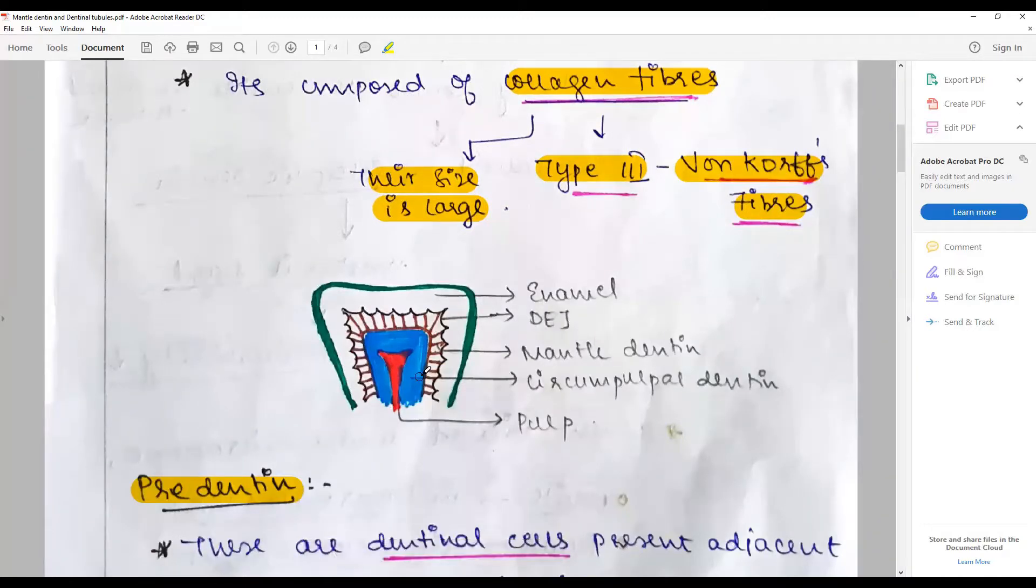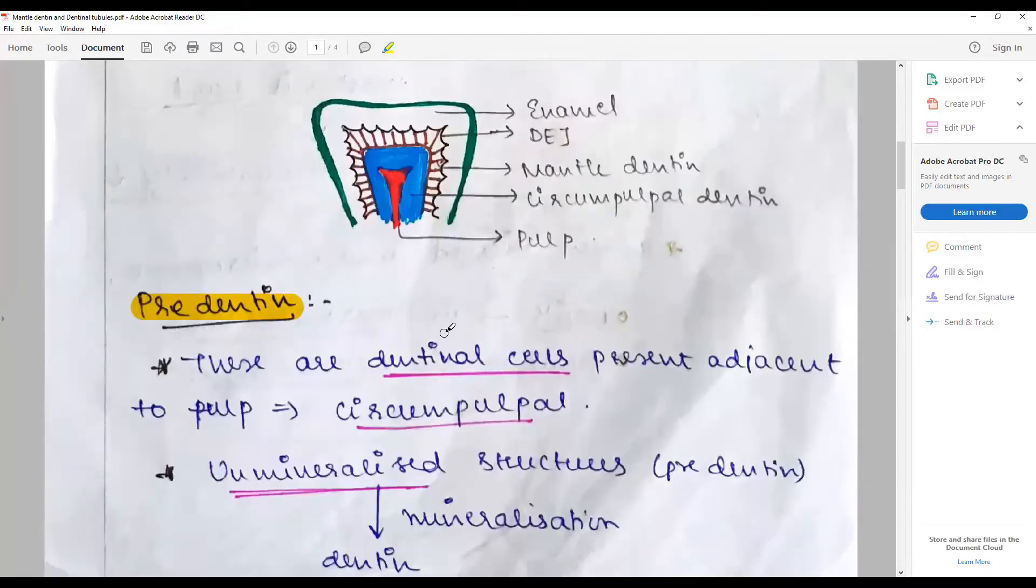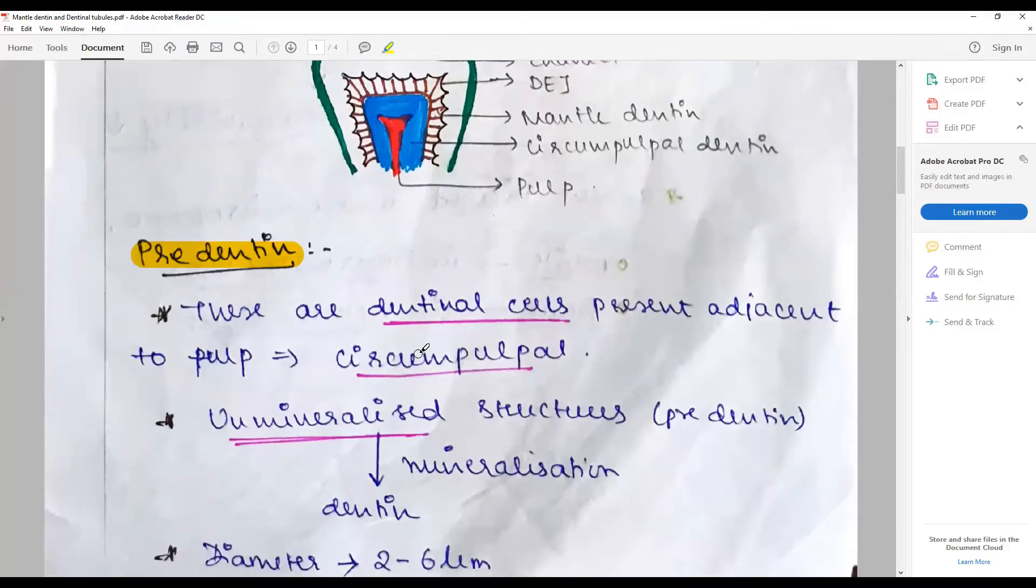A diagrammatic representation to show where this mantle dentine and the bulk formed by the circumpulpal dentine. Pre-dentine is the just formed dentine surrounding the pulpal circle between the mantle dentine and the pulp core.